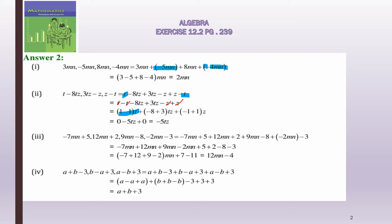Third question: -7mn + 5 + 12mn + 2 + 9mn - 8 + (-(2mn) - 3). In the first step we open the brackets and write everything out: -7mn + 12mn + 9mn, and plus into minus gives minus 2mn, then constants: +5 + 2 - 8 - 3.